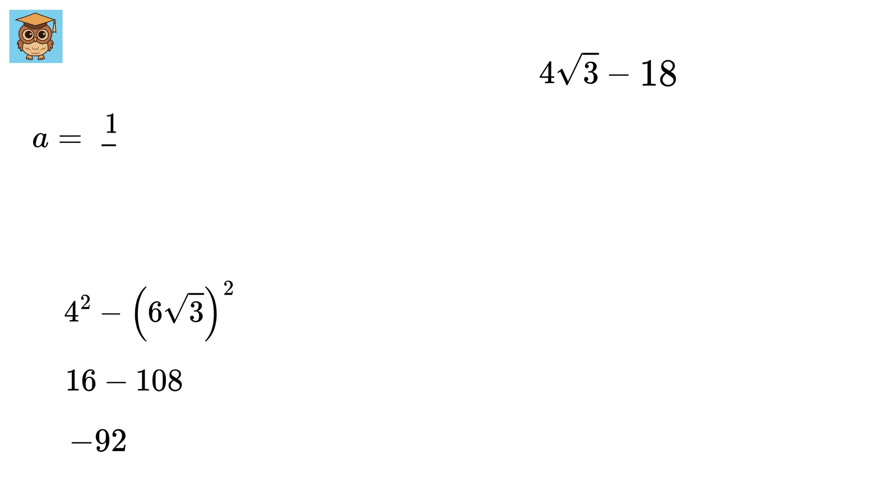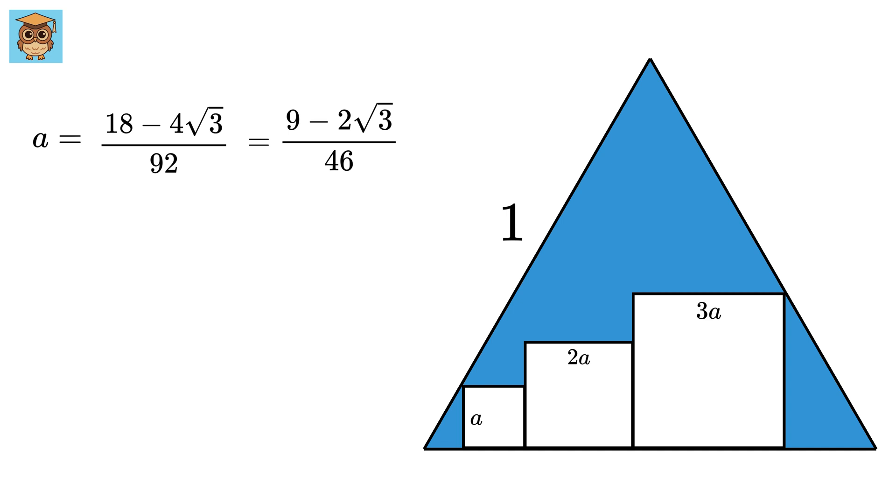Numerator will be 4 root 3 minus 18, so a will be 18 minus 4 root 3 by 92, or 9 minus 2 root 3 by 46. Awesome!